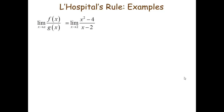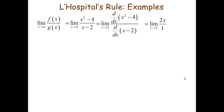So consider f/g as limit x tends to 2 of (x² - 4)/(x - 2). Instead of factorizing we will be using L'Hôpital's rule — we will differentiate the numerator separately and the denominator separately, then substitute x = 2 because it is no more indeterminate, and then we get 4. This was the same answer that we got by factorizing and by using L'Hôpital's rule.